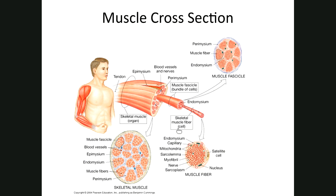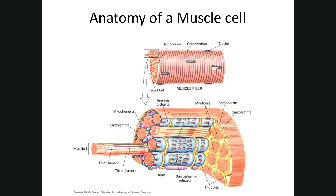Looking at a muscle cell, you can see they're long cylindrically shaped, multinucleate — all those nuclei are pushed peripherally — and they have striations or bands. They're long cylindrical multinucleate striated cells that lay parallel to each other, as we've seen on slides.